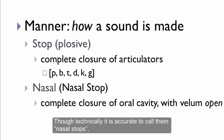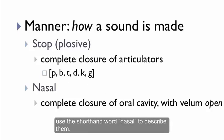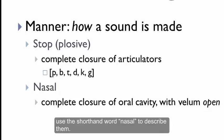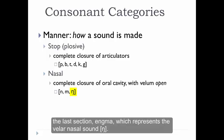Although technically it's accurate to call them nasal stops, in practice very few people do. It's far more common for people to use the shorthand word nasal to describe them. The nasals we have in English include m, n, and this odd-looking character that we saw in the last section — engma — which represents the velar nasal sound ng.